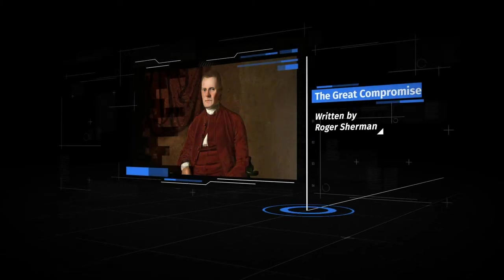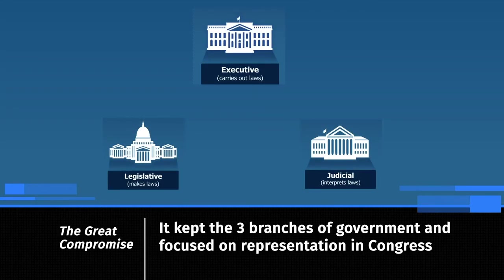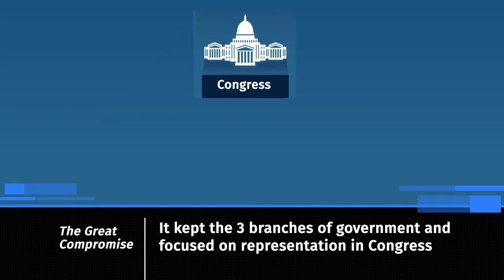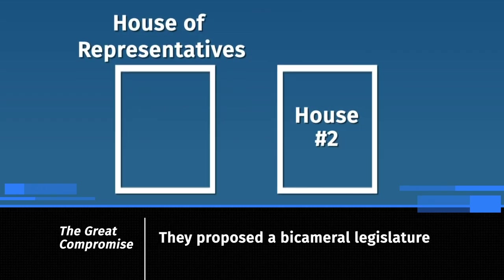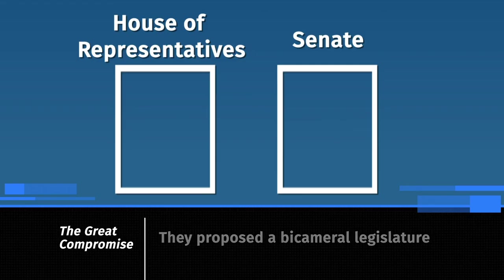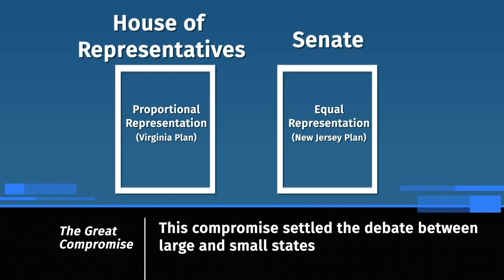After several weeks of debate, Roger Sherman of Connecticut presented the Great Compromise, also known as the Connecticut Compromise. This compromise kept the three branches of government and proposed a bicameral legislature with a House of Representatives and a Senate. The House of Representatives would have proportional representation, like the Virginia Plan suggested, and the Senate would have equal representation, like the New Jersey Plan suggested. This settled the debate between large and small states.